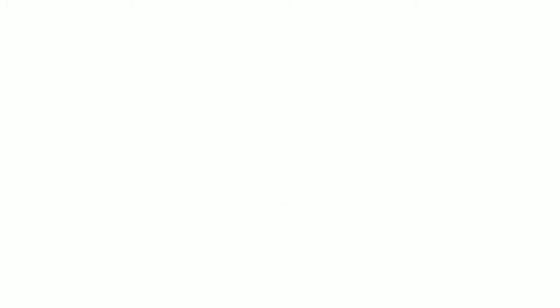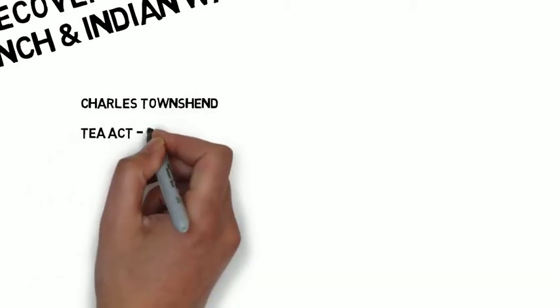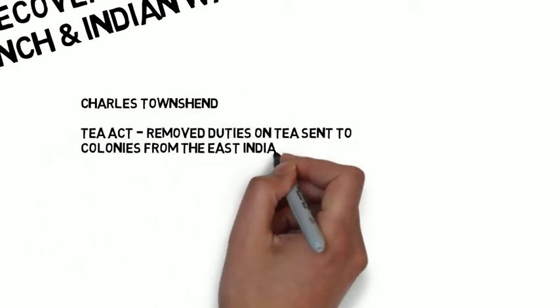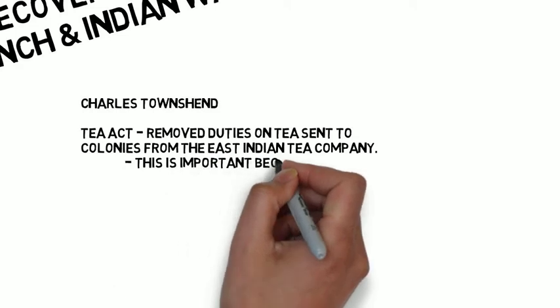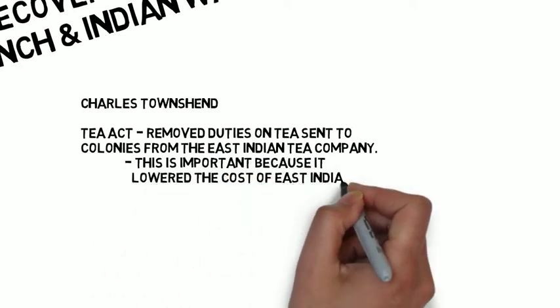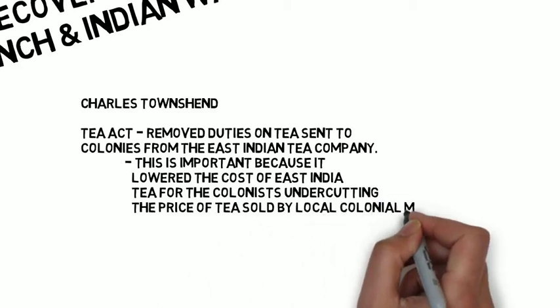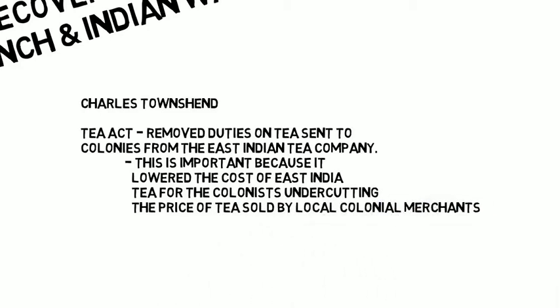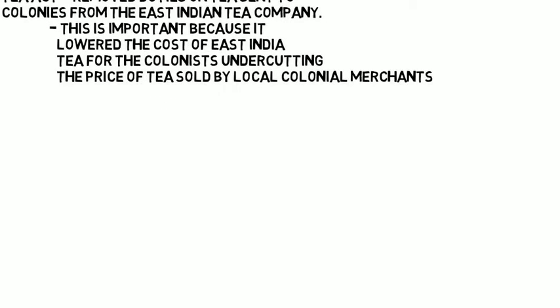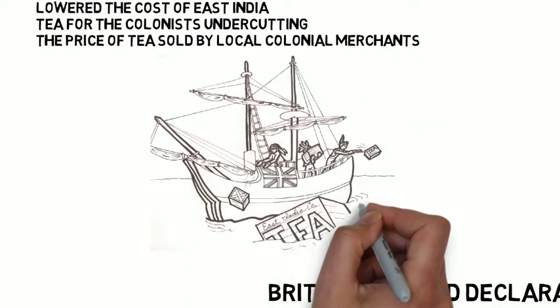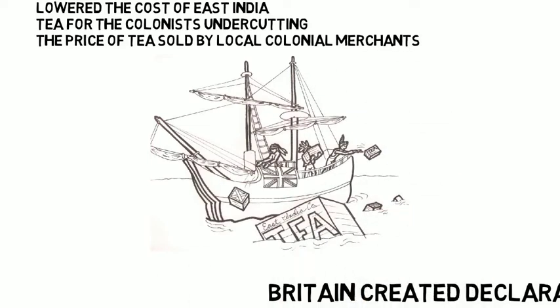After the Declaratory Act, a new prime minister came by the name of Charles Townshend, who wanted to raise taxes again. He passed the Tea Act which removed duties on tea sent to colonies from the East India Tea Company. This lowered the cost of East India Tea for the colonists, undercutting the price of tea sold by local colonial merchants, causing colonists to get upset. The Tea Act resulted in the Boston Tea Party, where colonists dressed up as Native Americans and dumped East India Tea into the Boston Harbor as protest.